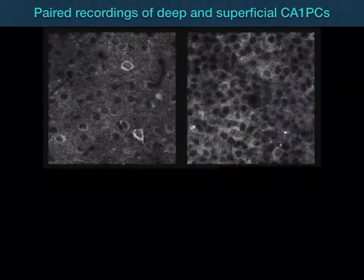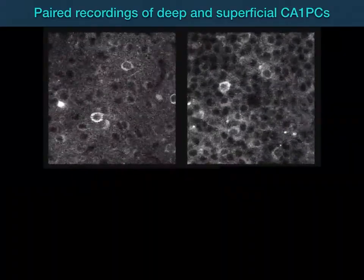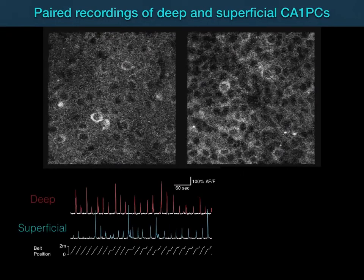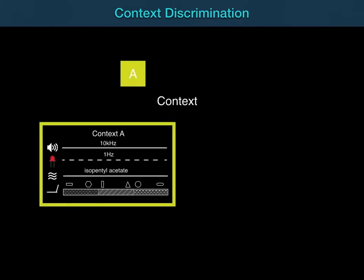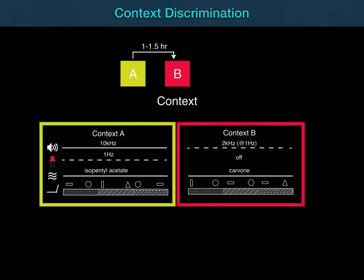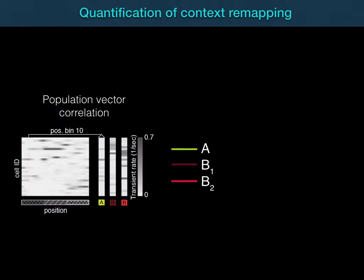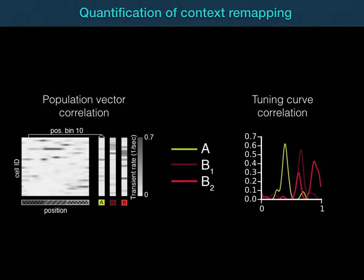This movie shows the motion-corrected signals from an example imaging session as the mouse ran for water rewards in a multi-sensory context. The traces below reflect calcium activity in two example deep and superficial CA1 pyramidal cells; significant calcium events are indicated in color. By plotting the transients as a function of the animal's position on the treadmill, we can estimate the spatial rate map for each cell. We exposed the animals to novel contexts A and B following an ABB paradigm. To assess the population-level response to the contextual manipulation, we compared the remapping observed in the AB condition with that of the BB condition, relying on a population-vector correlation as well as a single-cell tuning-curve correlation.